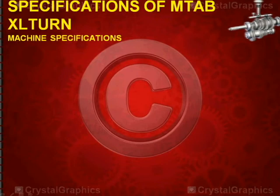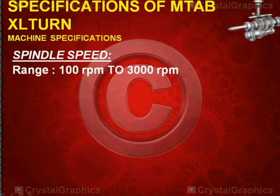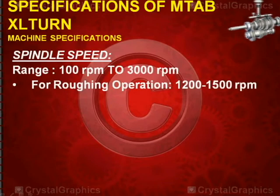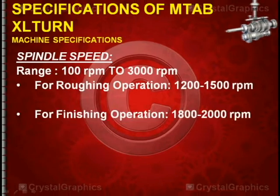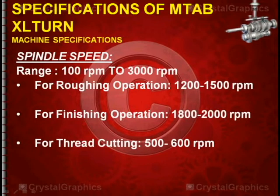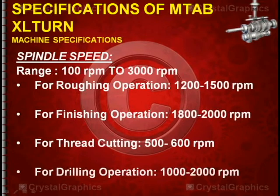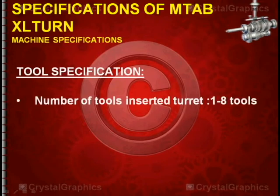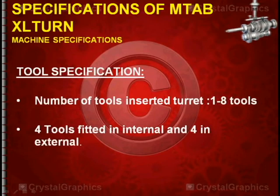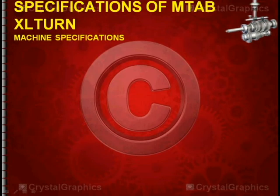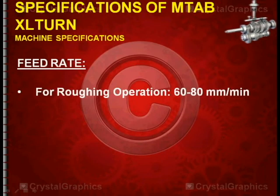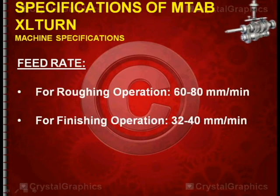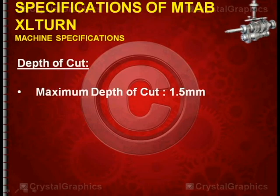Spindle speed specifications: the range is 100 to 3000 RPM. For roughing operations, 1200 to 1500 RPM; for finishing operations, 1800 to 2000 RPM; for thread cutting, 500 to 600 RPM; and for drilling, 1000 to 2000 RPM. The number of tools in the turret is 1 to 8, with 4 internal and 4 external. Feed rate for roughing is 60 to 80 mm/min, and for finishing is 32 to 40 mm/min. The maximum depth of cut is 1.5mm.